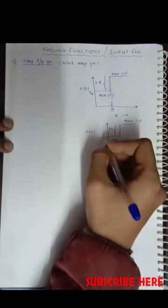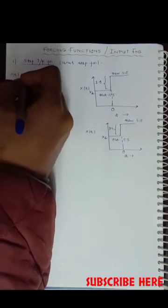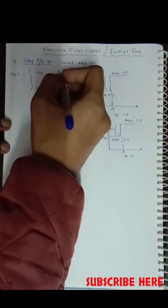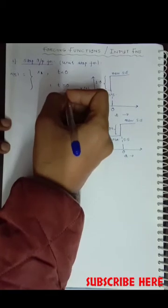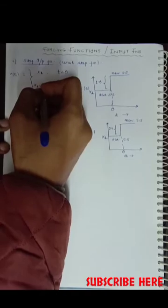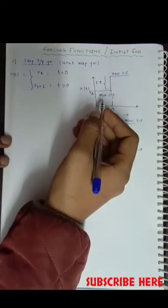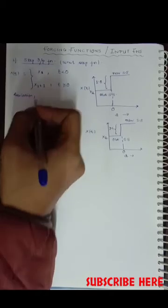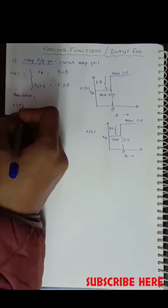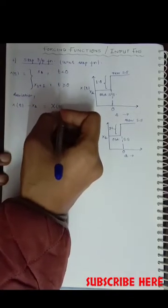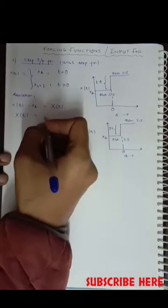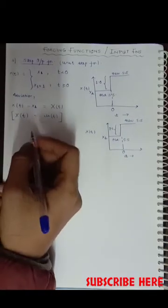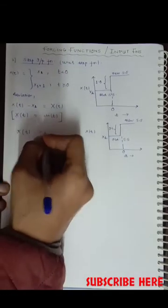If this step function has a magnitude of M, then your deviation from the old steady state to the new steady state will be of magnitude M. This function is defined as: x(t) equals Xs at any time less than zero, and Xs plus 1 at time equal to or greater than zero, since the magnitude of the step function is 1. The deviation capital X(t) equals u(t) for the unit step function, and capital X(t) equals M times u(t) for a step function of magnitude M.